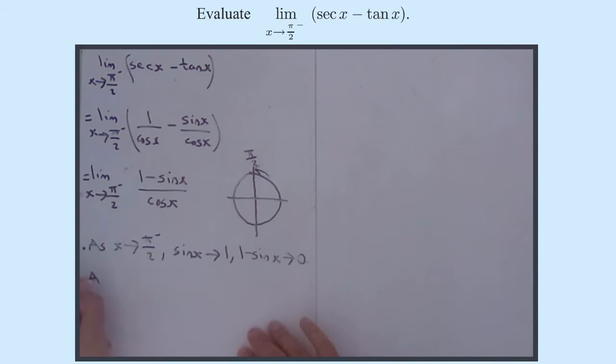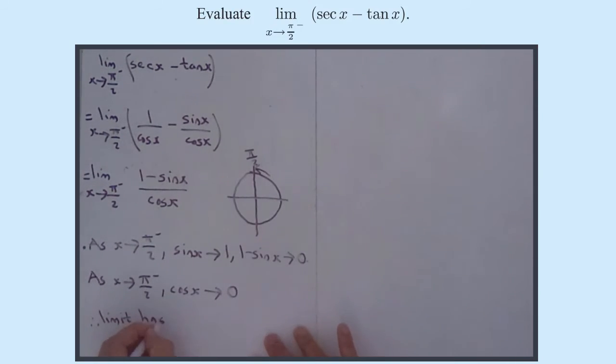And as x approaches pi by 2 from something less than pi by 2, cos x is approaching 0, so we do indeed have this indeterminate form. The limit has indeterminate form, and it's 0 over 0.